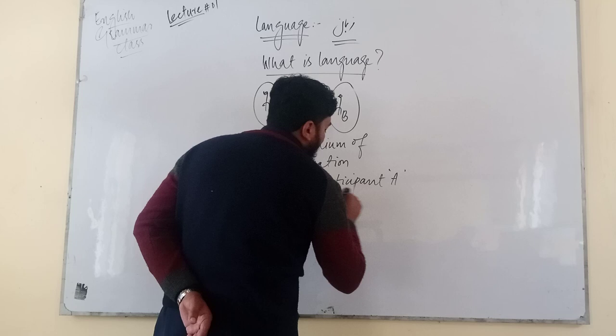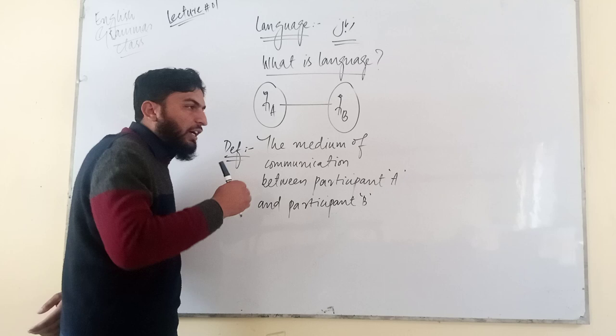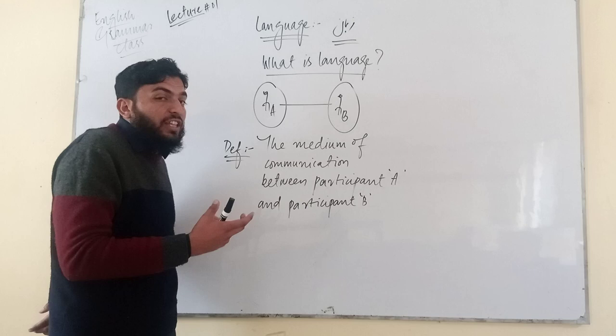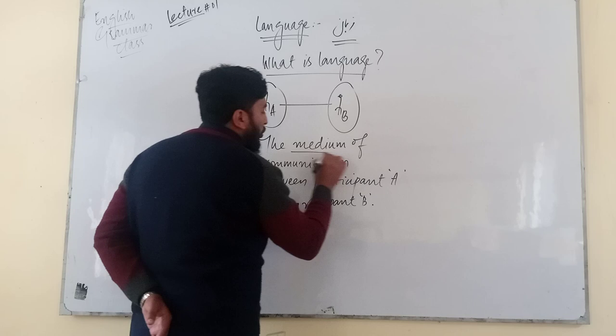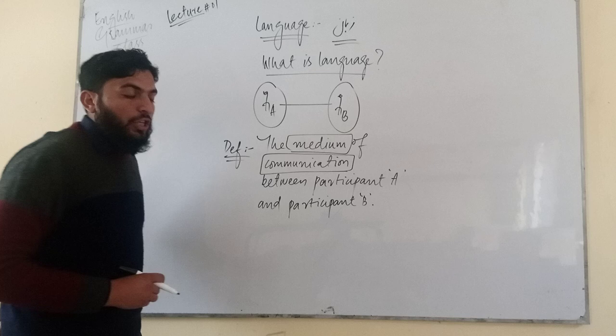Between participant A and participant B تو A اور B کے درمیان جو ہمارے ساتھ تعلق کا ذریعہ ہے گفتگو کا ذریعہ ہے گفتگو کا ربط بنانے کے گفتگو کا استعمال ہے یہ کس چیز کی وجہ سے ہے - that is called language. ابھی سوال یہ ہوتا ہے کہ what do we mean by the word medium?